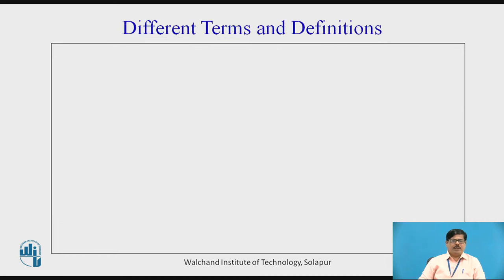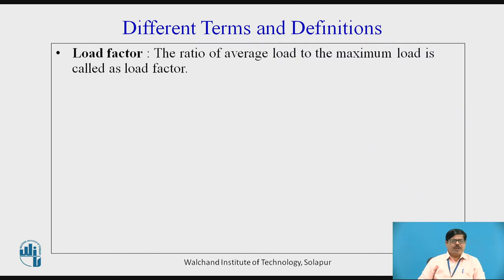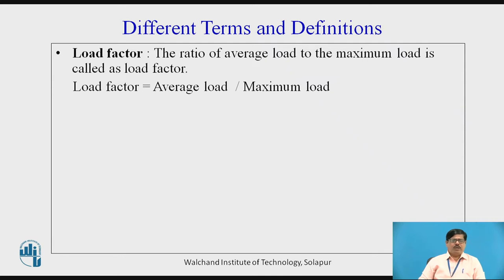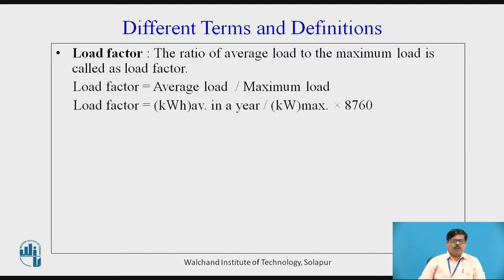The next very important term related to power plant performance is the load factor. It is defined as the ratio of average load to the maximum load. The load factor is required to be high — if its value is close to 1 or 100%, the power plant is being utilized economically. A lower value of load factor indicates that the power plant is being under-utilized.